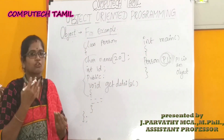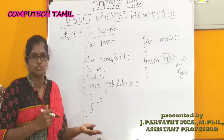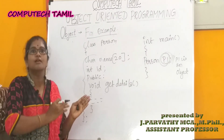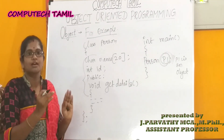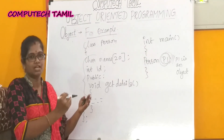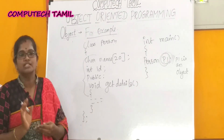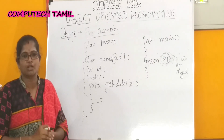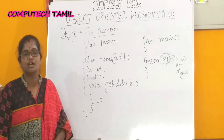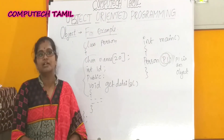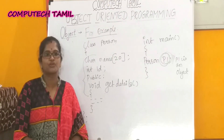So, object is an instance or copy of a class. Class is the original blueprint, and object is a copy or instance. If you have any doubts or questions, please comment. Subscribe, like, and share. Thank you for watching.